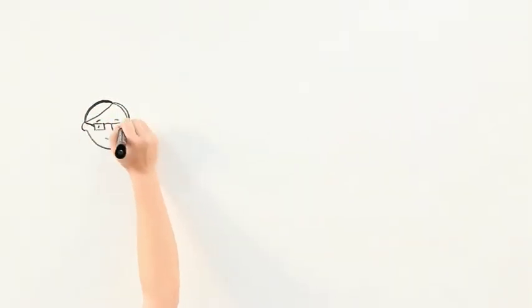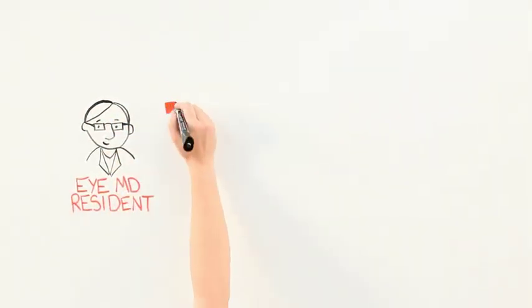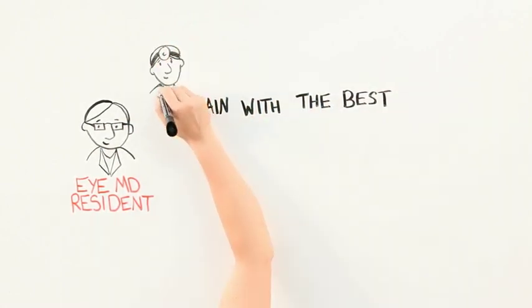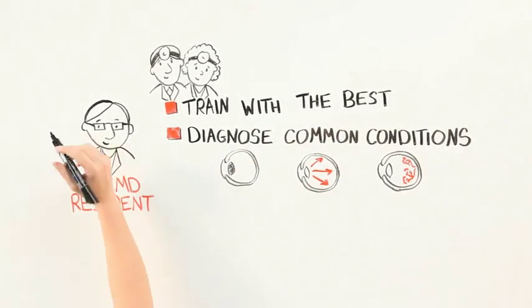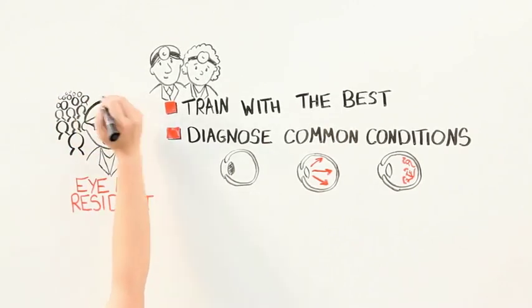While in your residency to become an MD, you are an apprentice of sorts. You train with some of the best ophthalmologists in the country and learn how to diagnose common eye conditions like cataracts, glaucoma, and macular degeneration. But because you are exposed to over 5,000 patients per year, you also learn how to diagnose and treat very rare conditions.